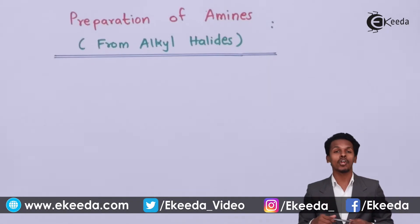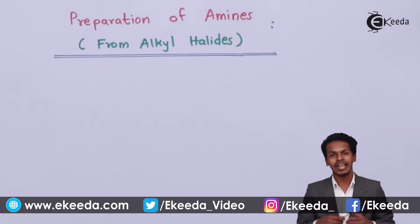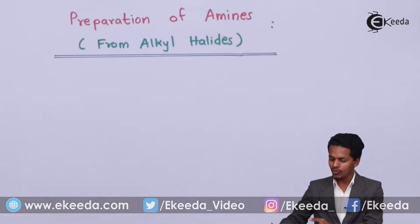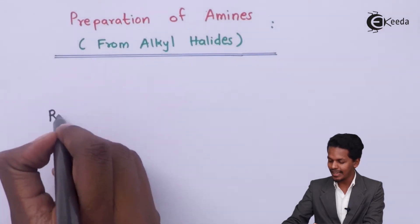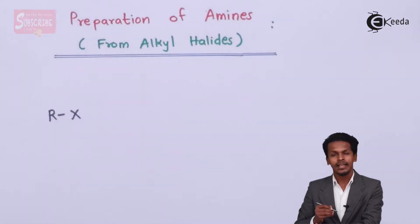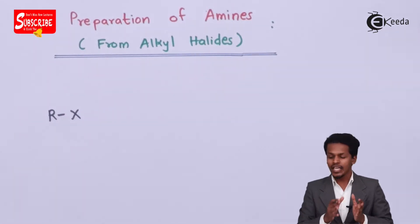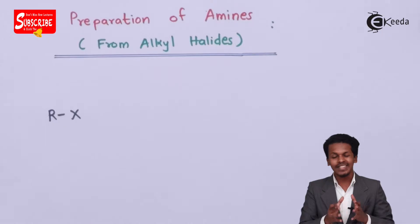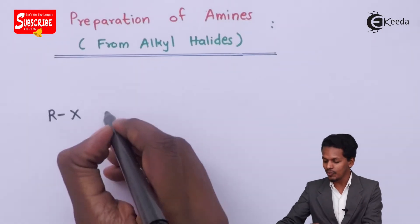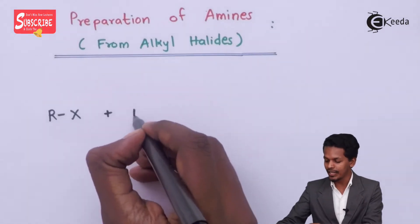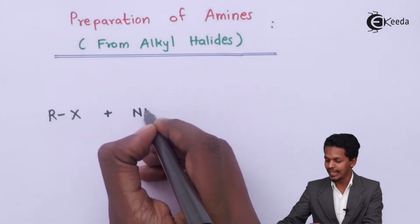In this topic we are going to talk about how we can prepare amines from alkyl halides. Basically, if I talk about alkyl halide, I could represent it as RX. If we have to convert this alkyl halide into an amine, we have to react it with ammonia, that is NH3.